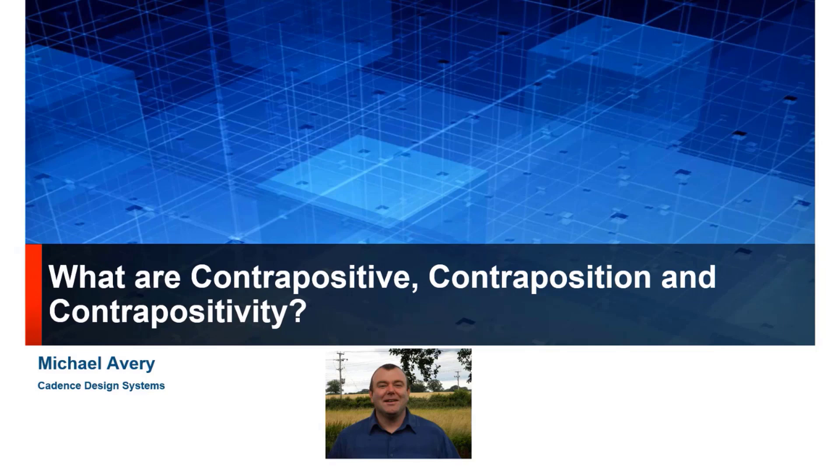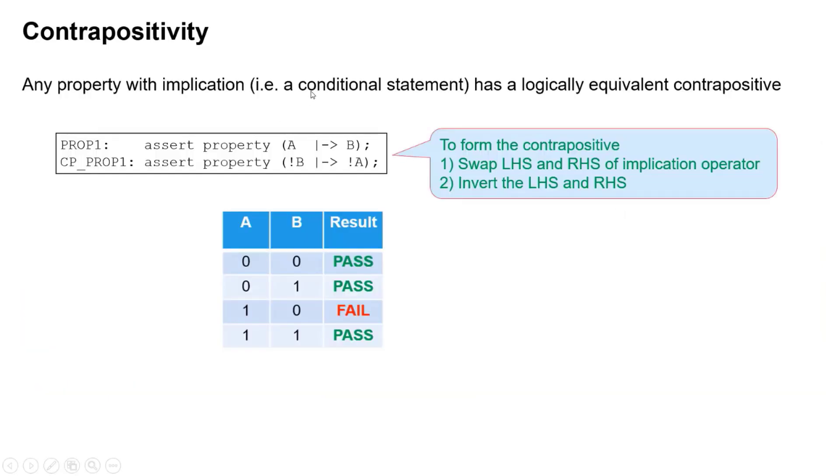So contraposition is a mathematical construct or logical construct, and what it states is this: any property with implication, i.e. a statement that's conditional, has a logically equivalent contrapositive.